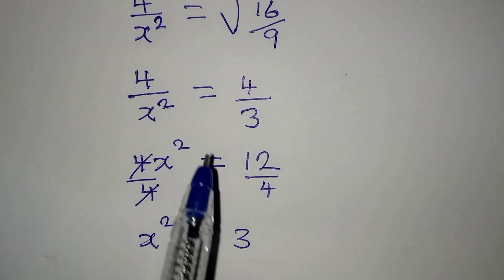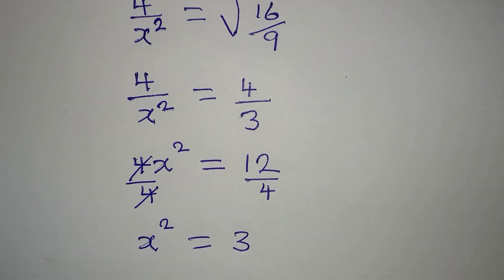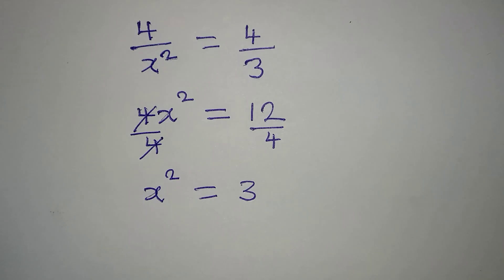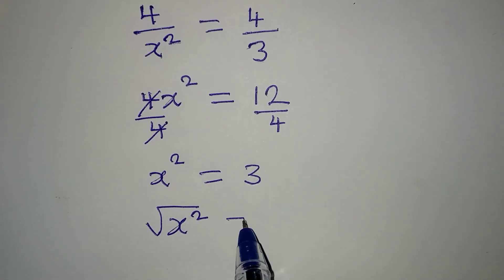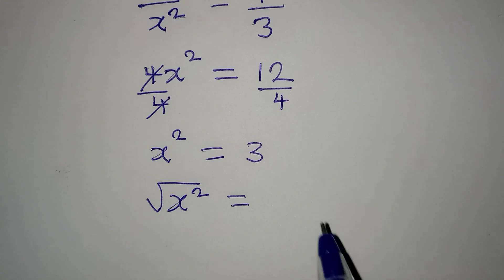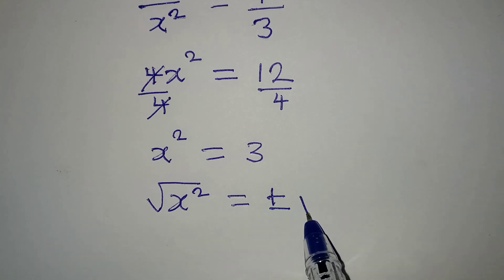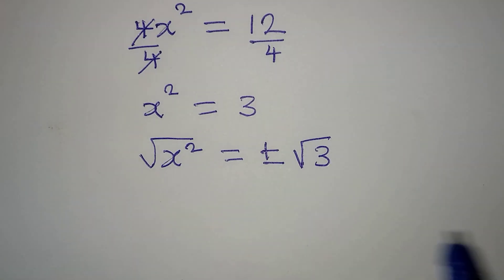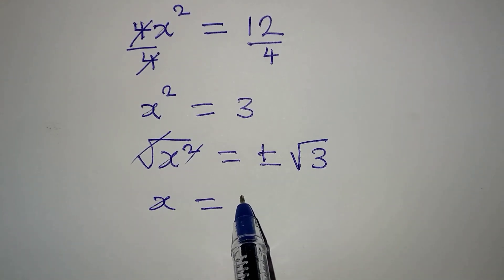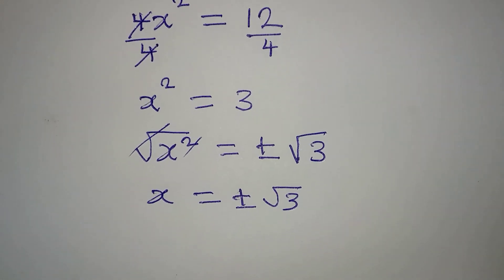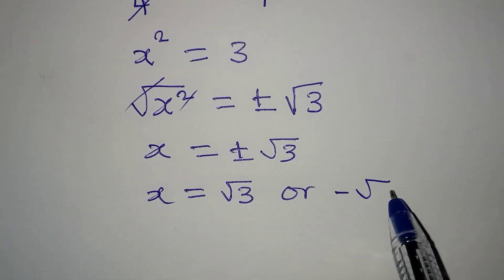Now, what I wanted to do before was to work with the denominator since the numerators are the same, but this is the step that I took. From here, we need to take the square root of both sides, and remember that when you are taking the square root of both sides you will have two values, which is plus or minus square root of 3. This cancels this, and x is now equal to plus or minus square root of 3.